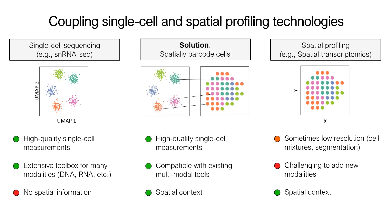When we developed slide tags, we thought it would be great if we could unify these two worlds — where we can collect single cell sequencing and at the same time know exactly where those cells came from. That's the gist: can we take all of the single cell measurements and convert them into spatial cell measurements?